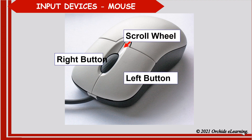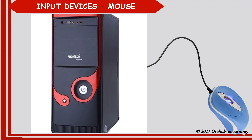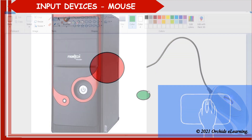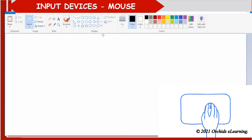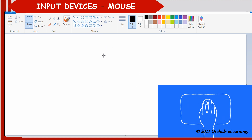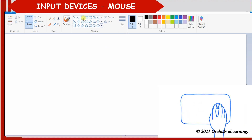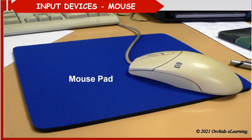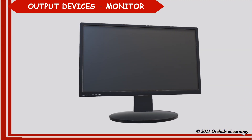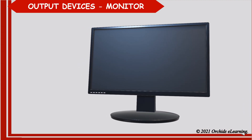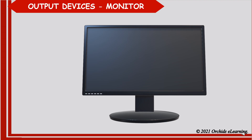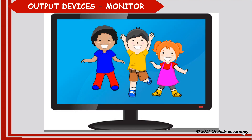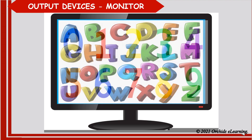Mouse: a mouse has two buttons and a wheel in the center. It has a long wire connected to the CPU box. Mouse is a pointing device — it helps to point different things on the computer, draw, color, and play games. You should always place the mouse on the mouse pad.